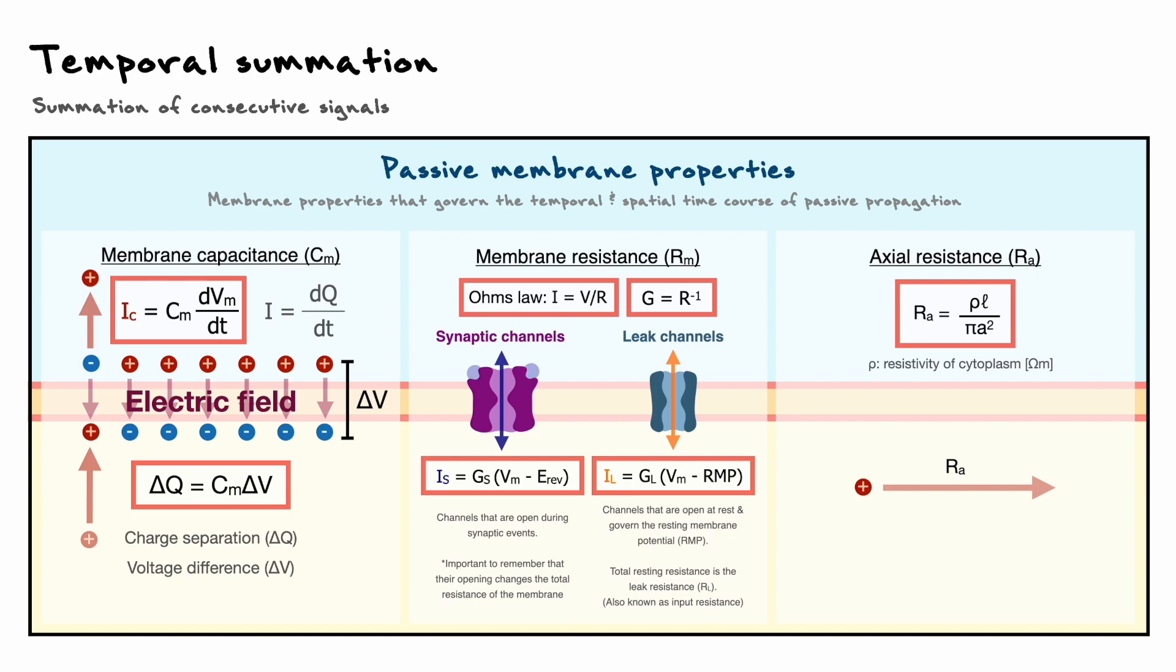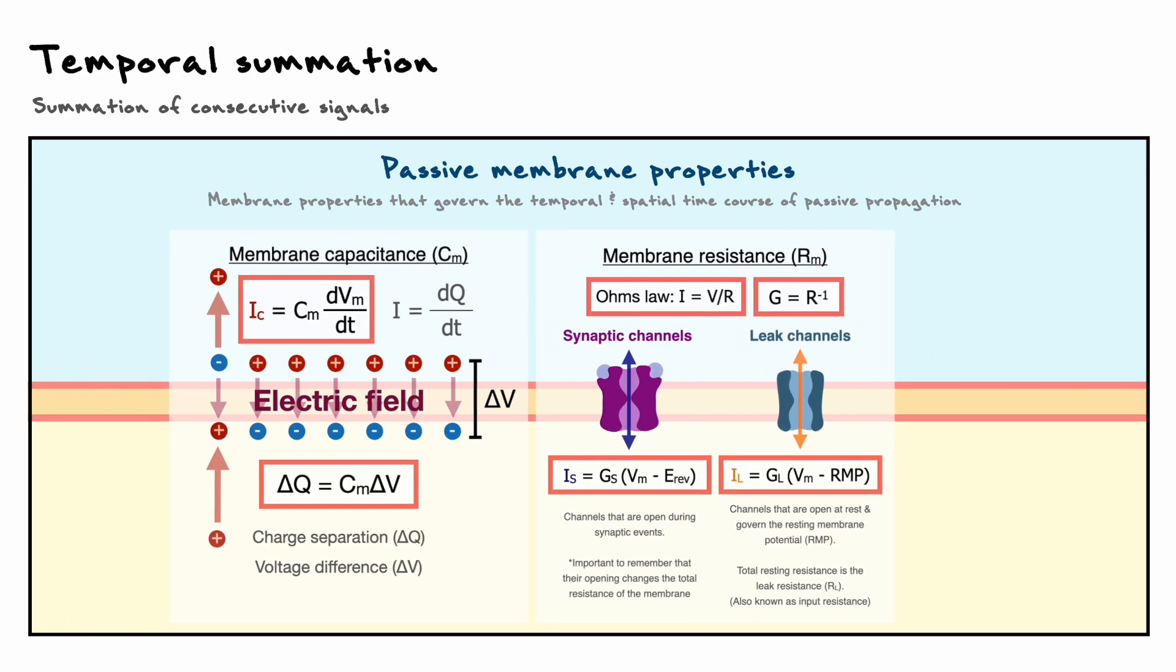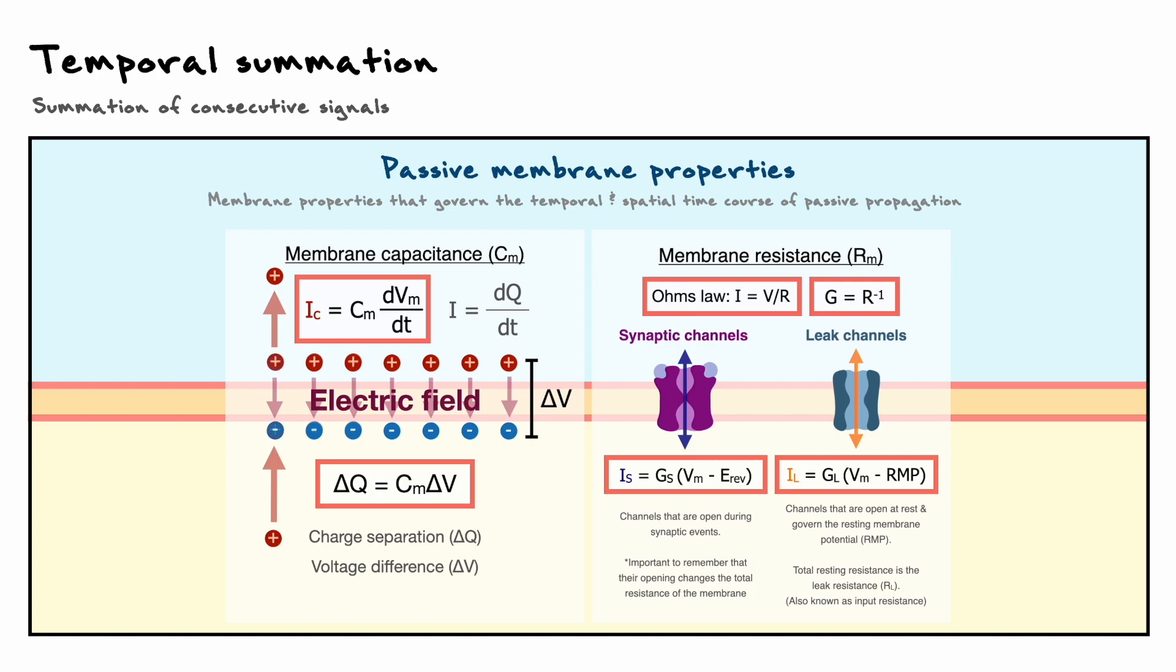Now, to understand temporal summation, we only need the two first properties: membrane capacitance and membrane resistance.